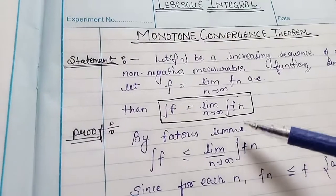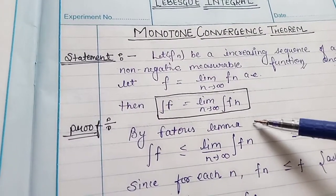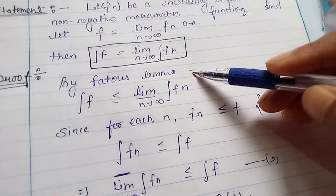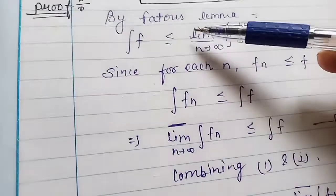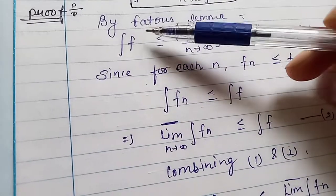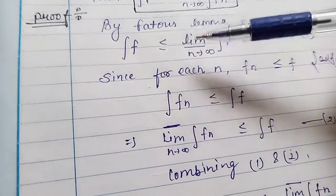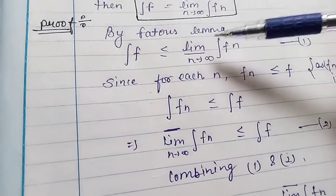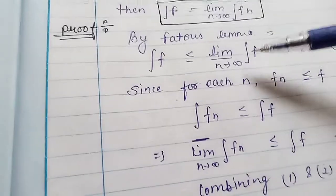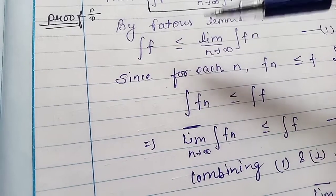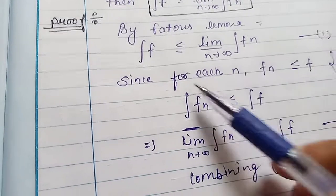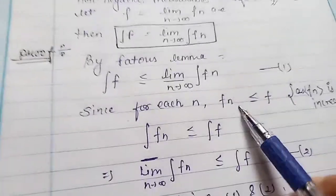We can prove this by the help of Fatou's Lemma. If you haven't seen the Fatou's Lemma proof, you can check out my previous video. Fatou's Lemma states that the integral of f is less than or equal to the limit inferior as n tends to infinity of the integral of fn. This is our first condition.